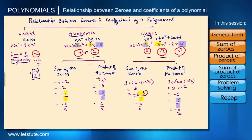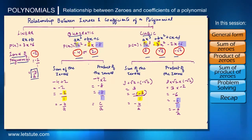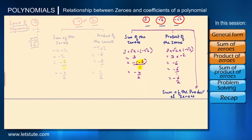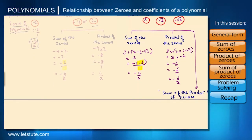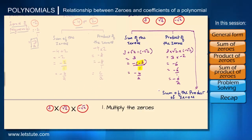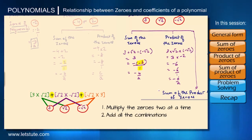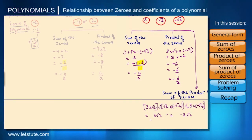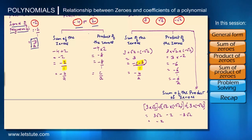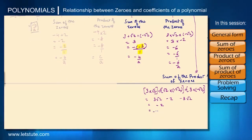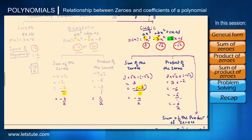In the case of a cubic polynomial, we have three zeros, so there is one more relationship: the sum of the product of zeros taken two at a time. We multiply the zeros in different combinations, two at a time, and then add them up. That comes to be equal to minus two, which is minus two upon one. Compared to the standard form, this is c upon a.